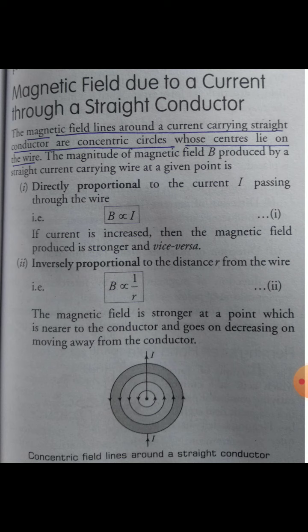In this chapter we are understanding the magnetic effect of electric current — when electricity passes through any electric wire, what happens to the magnetic effect of that current. When electric current flows through a conductor, a magnetic field is produced around it. The pattern of the magnetic field produced depends on the shape of the conductor.